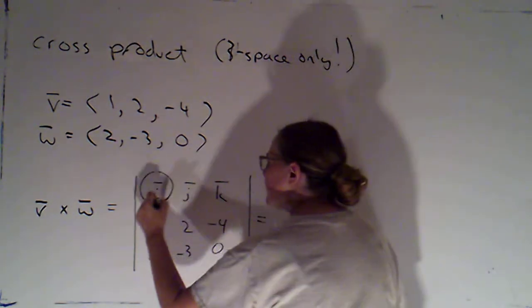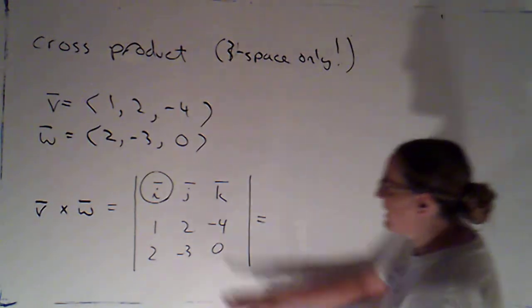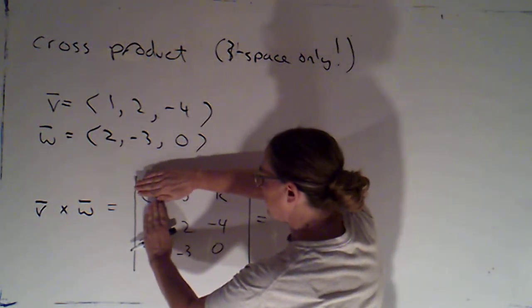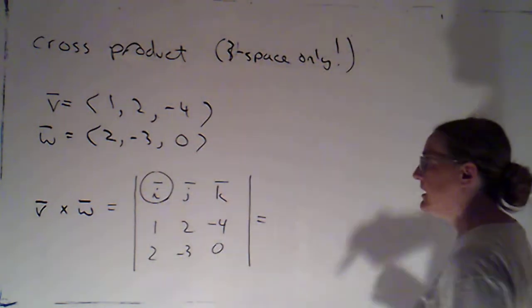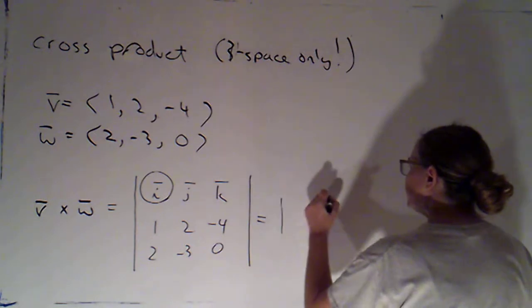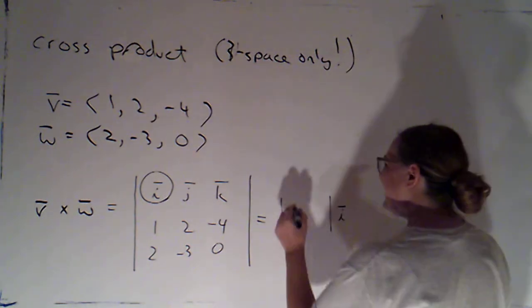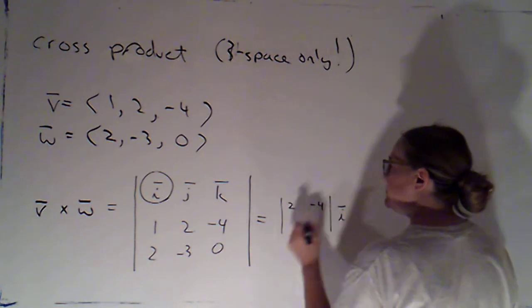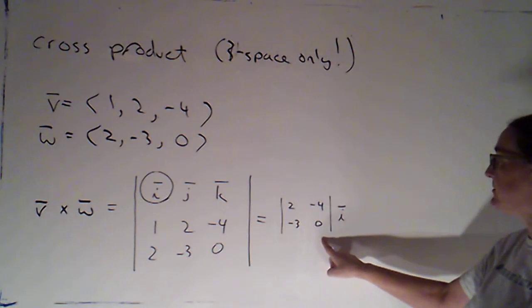So if I do that, I would say, okay, well my first entry is i, and what I'm supposed to do is multiply that by the 2 by 2 determinant that I get if I eliminate the row and the column that contain i. But that's just going to be a number. So what that's going to do is give me a scalar multiple of i. And that scalar will be the 2 by 2 determinant of this matrix, 2, negative 4, negative 3, 0.